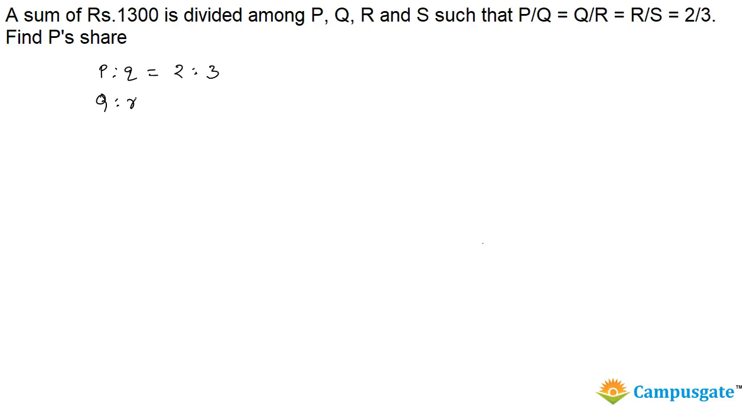Because Q is common in both ratios, we try to equate these two ratios by multiplying the top ratio by 2 and the bottom ratio by 3. Therefore we get P:Q = 4:6 and Q:R = 6:9. From this we get P:Q:R = 4:6:9.